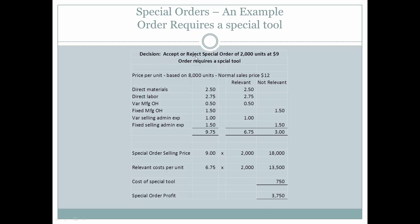Now let's look at another scenario. The decision is whether to accept or reject the special order of 2,000 units at $9 per unit. However, the order requires a special tool. We would have the same direct material and direct labor costs — the same cost per unit and the same analysis — however, we must add the cost of the special tool to the other relevant costs when considering this order. When we take all of these costs and deduct them from the $18,000 we expect to receive, we see that there still is a profit of $3,750 for the order, and so the company would still accept the special order.